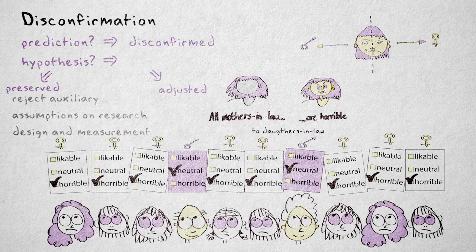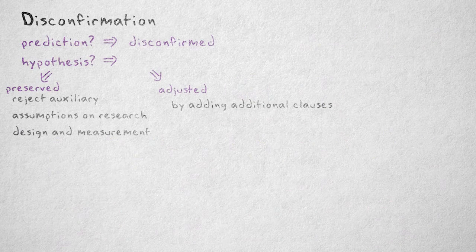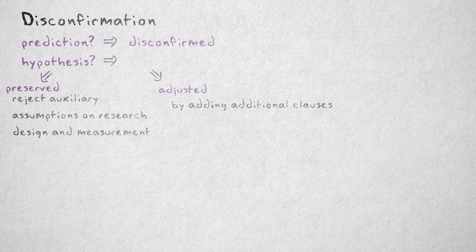If we alter the hypothesis slightly by adding additional clauses—it only applies to daughters-in-law—then strictly speaking, we're rejecting the original hypothesis, sort of.